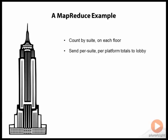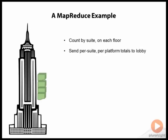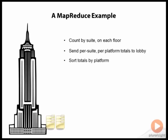We end up having a lot of slips of paper — in effect, we could have up to six slips of paper per suite. So we need to collect these all in one place. There are actually mail chutes in the Empire State Building. Imagine they were still in use and we could drop all those slips of paper into the mail chutes. They would all collect downstairs in the lobby, where we had a couple more people waiting to collate all those slips into six piles, one for each of the smartphone platforms.